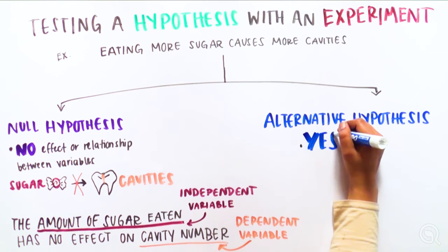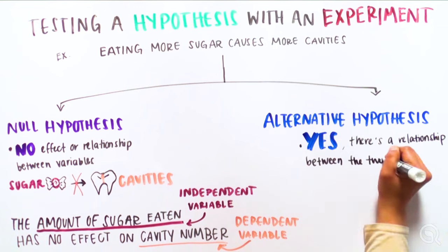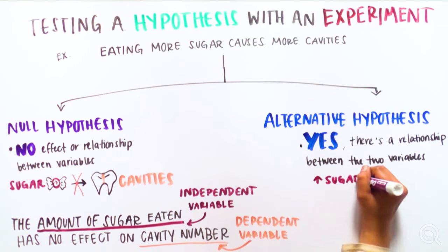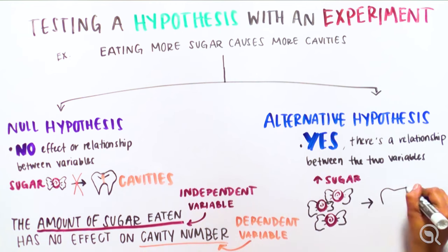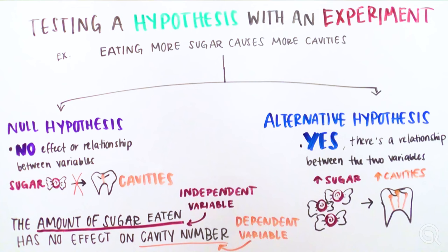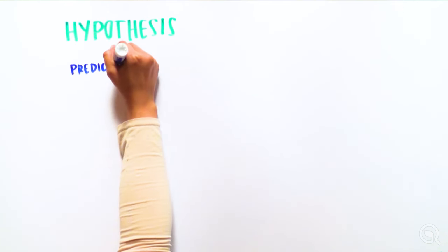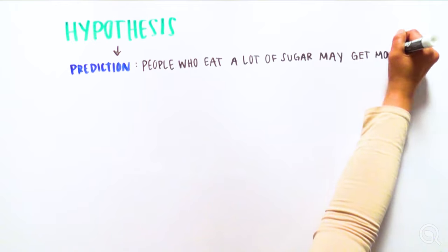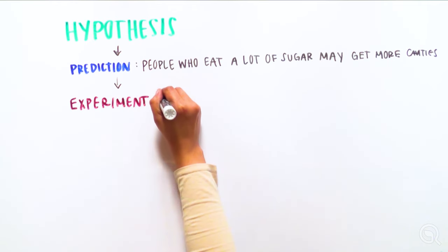The alternative hypothesis is often the same as the initial hypothesis, and it predicts that there is a relationship between the variables. In this case, one alternative hypothesis could be that increasing the amount of sugar increases the number of cavities developed. Our hypothesis leads to the prediction: people who eat a lot of sugar may get more cavities, which we can then test with an experiment.